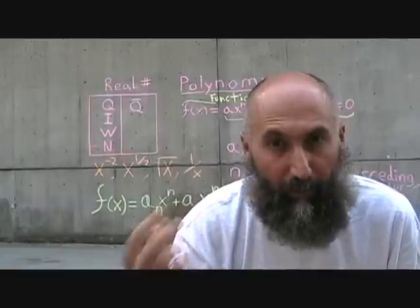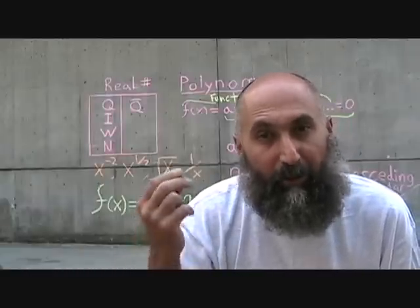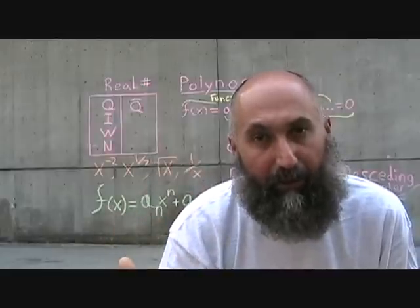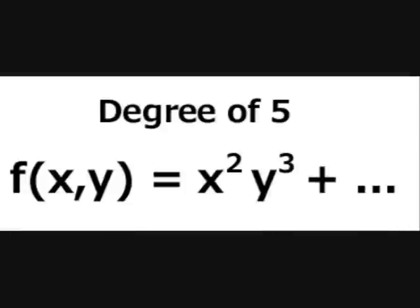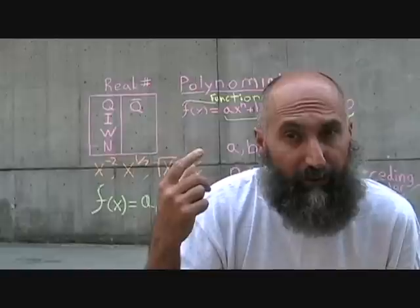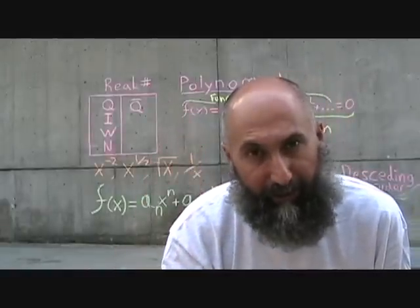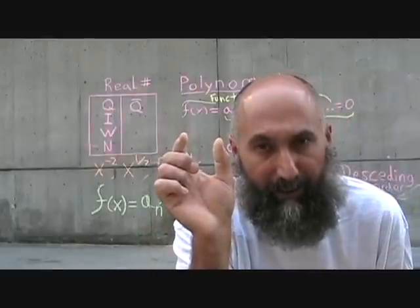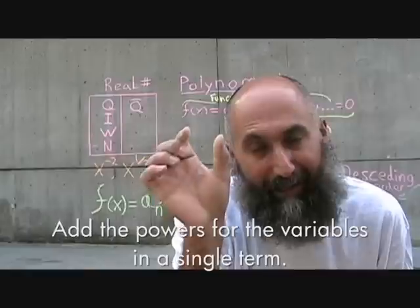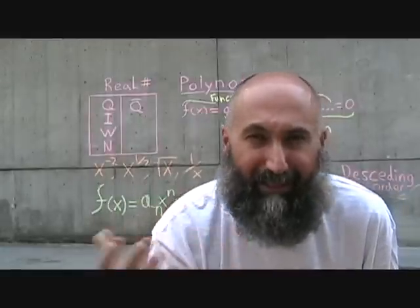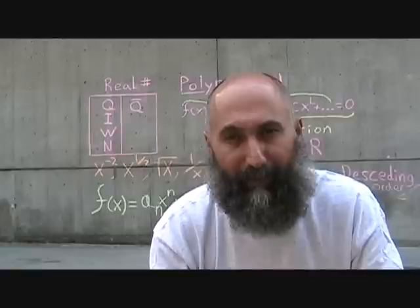With one variable, you take the highest power and that's the degree of the function. If you have multivariable polynomials — multivariable functions or equations — you add up the powers of the variables in the leading term, and that becomes your degree. For example, if you had x squared and y cubed as your first term, you add 2 and 3, and it becomes degree 5. With multivariable functions you can order things based on different criteria, but we'll set those aside for now.